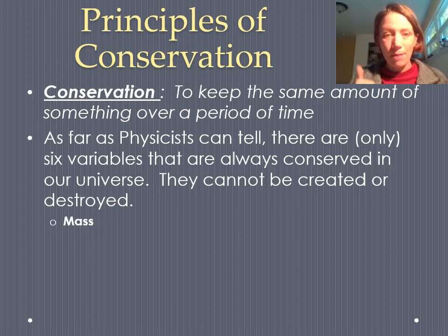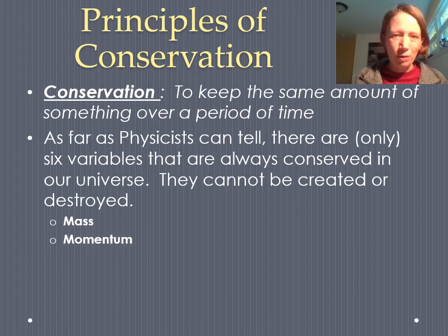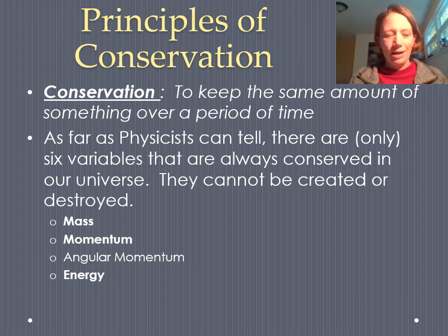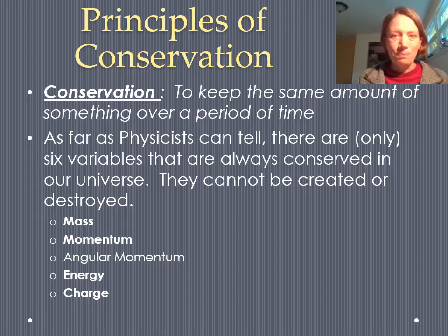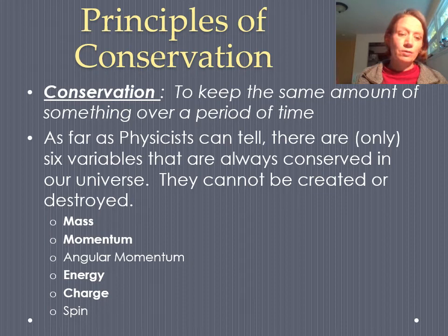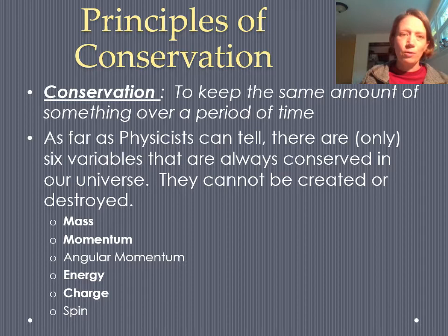Those six things are: mass; momentum — if you can't define momentum, that's fine, we'll come back to that later in the year; angular momentum, which is even more complex, we won't cover that this year but if you take AP Physics C we'll talk about that a lot; energy, which is what we're covering in this unit; charge, which will come up in our electricity unit; and spin. You'll see some overlap with the fundamental variables. Conservation of mass, momentum, energy, and charge will be our underlying focus for the entire year.